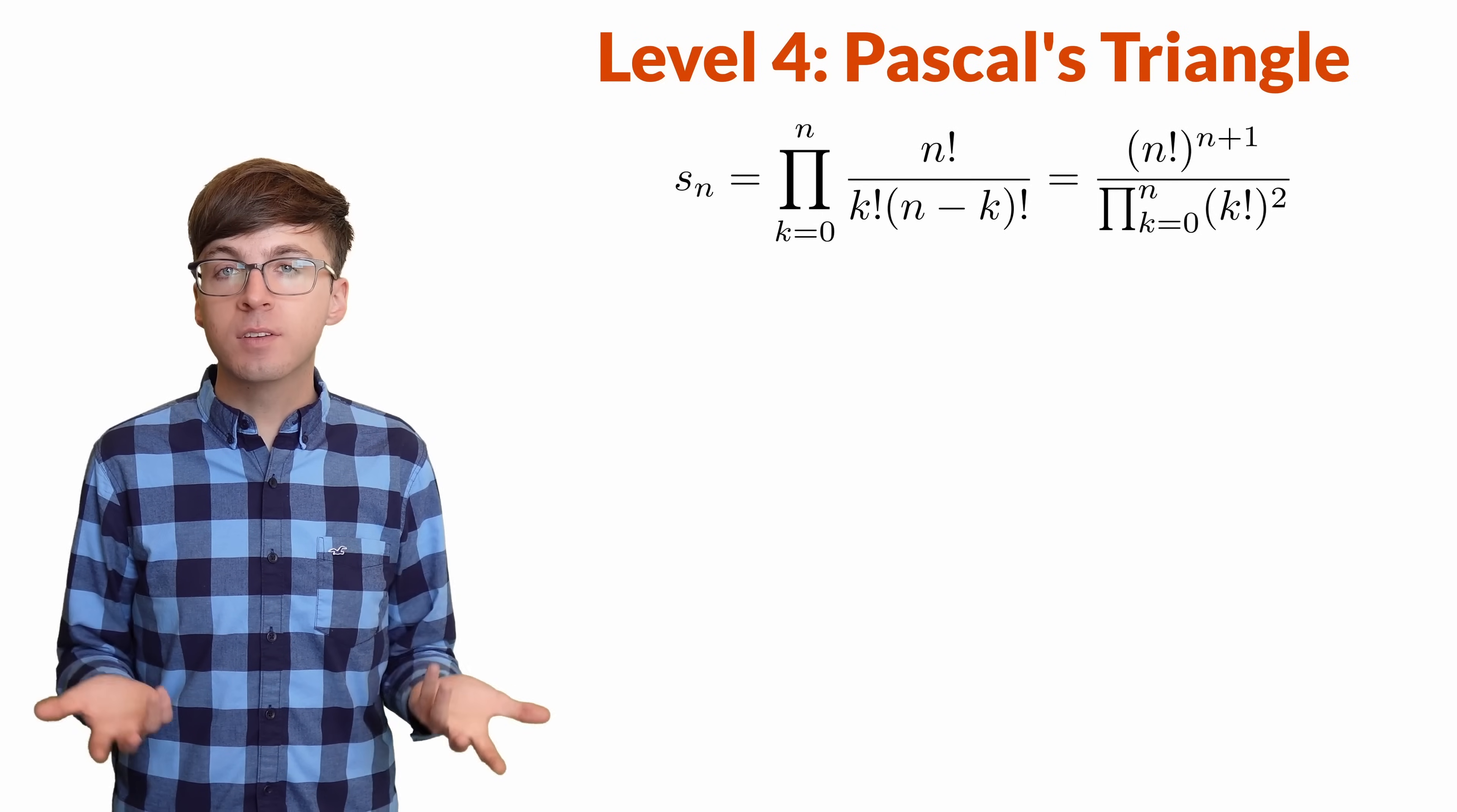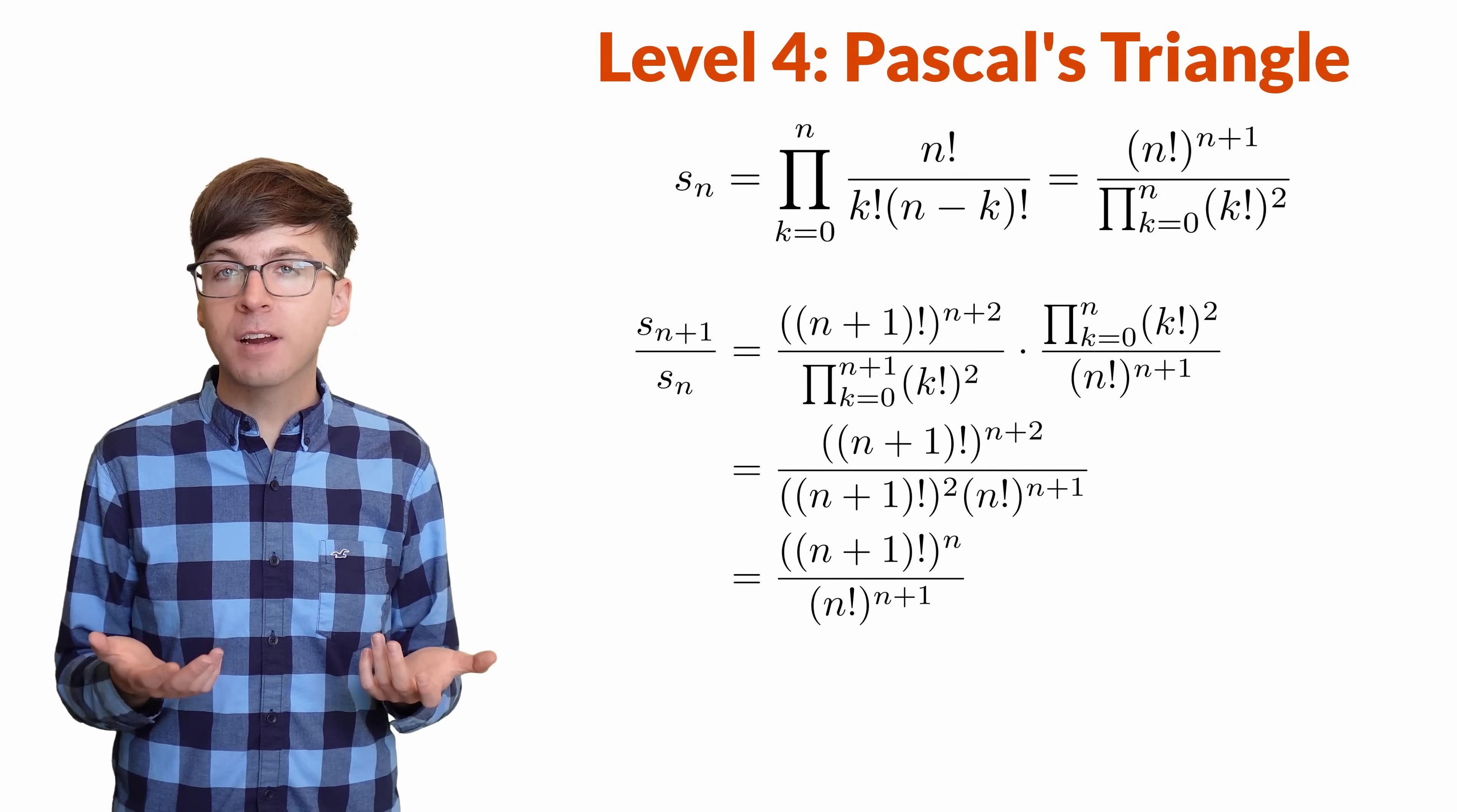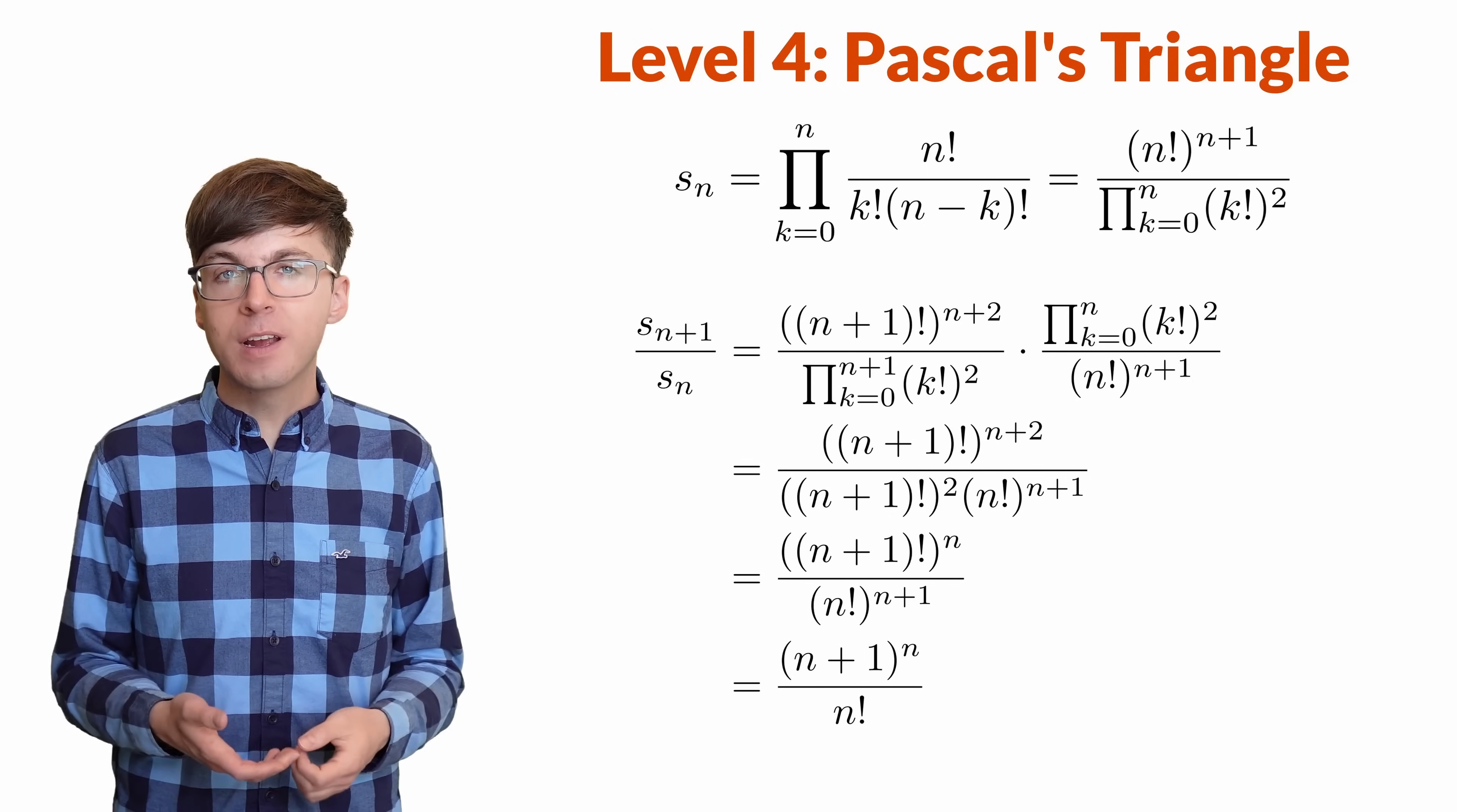Then we can divide two successive rows. Most of the factors in these two products will cancel out, leaving just an n plus 1 factorial squared in the denominator. Then we can cancel those with two of the n plus 1 factorials in the numerator. Now we're left with n plus 1 factorial to the n over n factorial to the n plus 1. All of the factors in the numerator will cancel except for the n plus 1s, leaving n plus 1 to the n. In the denominator, we'll cancel n of each value, leaving just one of each. That's n factorial. That's a nice formula for these ratios.